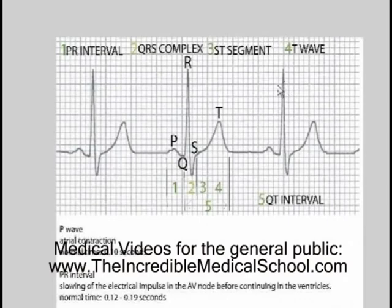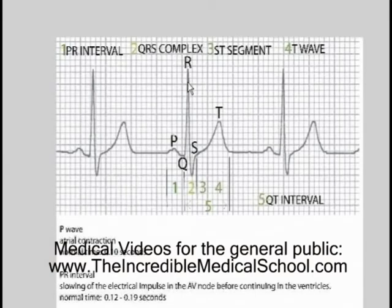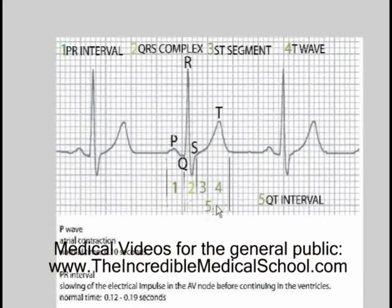In this example, we have 19 small boxes for the RR interval. Therefore, the QT interval should be less than half of that. Measuring the QT interval, we get approximately 8 boxes, which is less than half — so the QT interval here is correct.